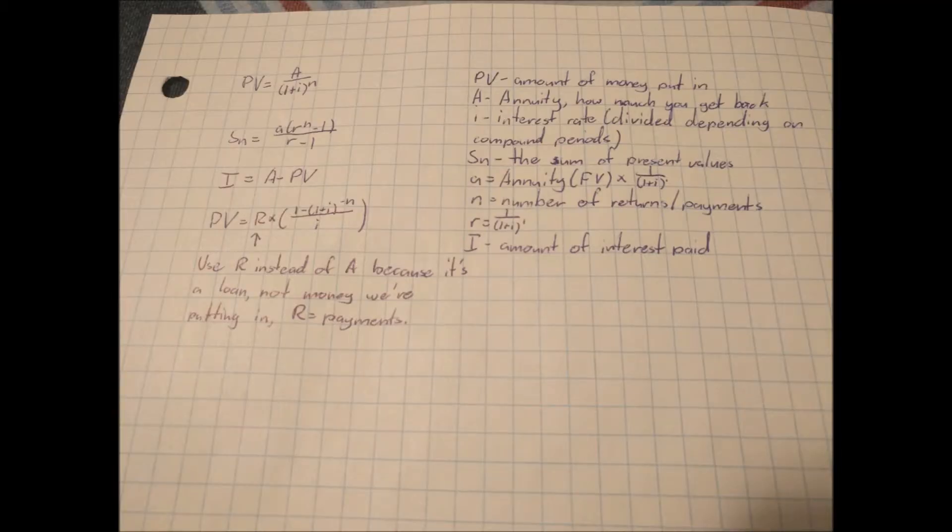The first formula is PV equals A divided by 1 plus I to the power of N. PV represents the amount of money you put in, known as present value. A, which is annuity, is how much money you will get back. I stands for the interest rate. Note that the interest rate is always divided by the number of compounding periods.